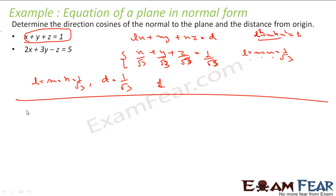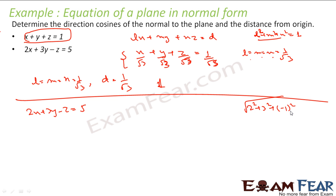Second one: compare 2x plus 3y minus z is equal to 5. If you find the sum of squares, this becomes 2² plus 3² plus (minus 1)², which is 4 plus 9 plus 1, equal to 14, that is root 14. So to convert this into the form Lx plus My plus Nz equals d where L² plus M² plus N² equals 1, I will divide everything by root 14.